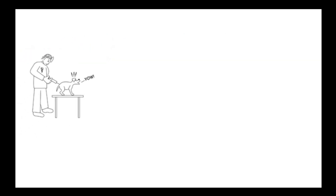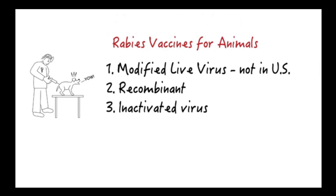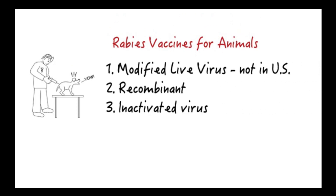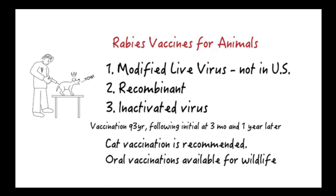Many effective vaccines — such as modified live virus, recombinant, and inactivated types — are available worldwide. No modified live rabies virus vaccines are currently marketed in the U.S. After an initial series of two vaccines one year apart, recommended vaccination frequency is every three years. Because of the increasing importance of rabies in cats, vaccination of cats is now highly recommended. Oral vaccines have only been approved for use in wildlife.